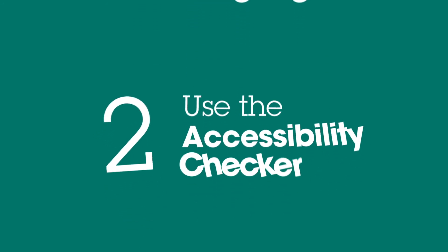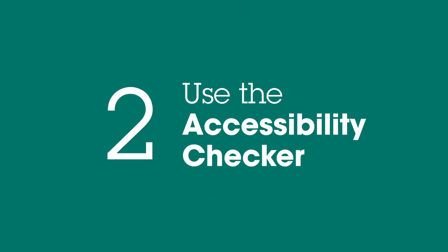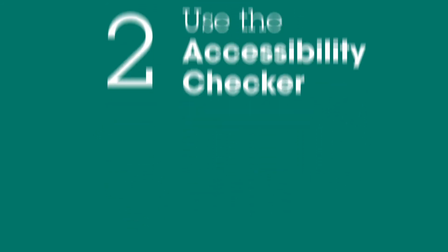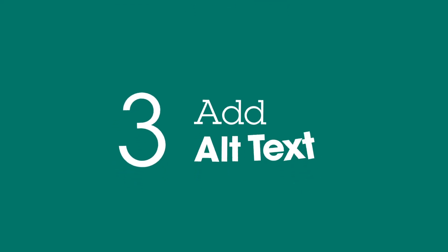Number two: use the accessibility checker in the review panel. Number three: add alternative text, also called alt text, that describes the images and graphics in your file.